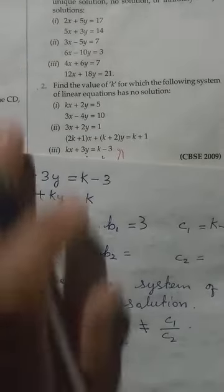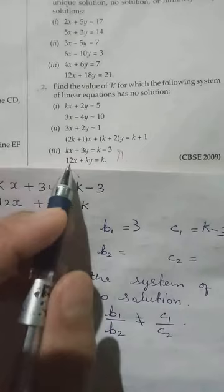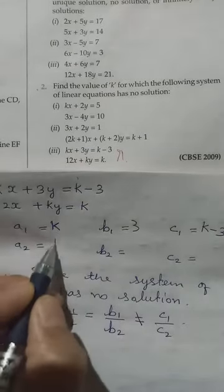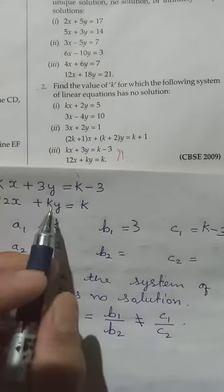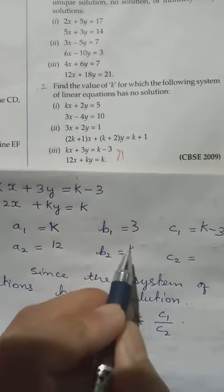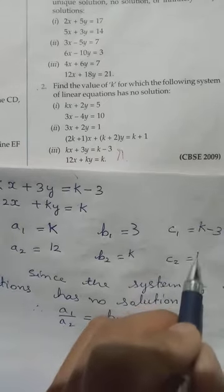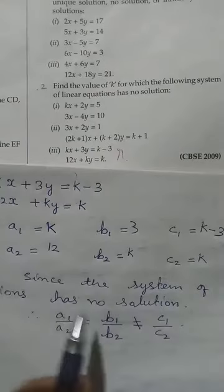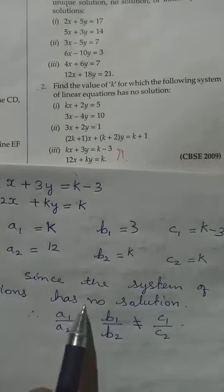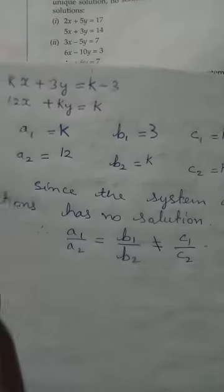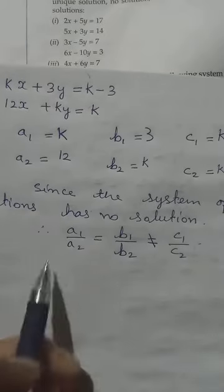From equation 2, the coefficient of x is 12, that will be a₂. With y we have k, that will be b₂. The constant term is k, so c₂ equals k. The question clearly states the system has no solution.